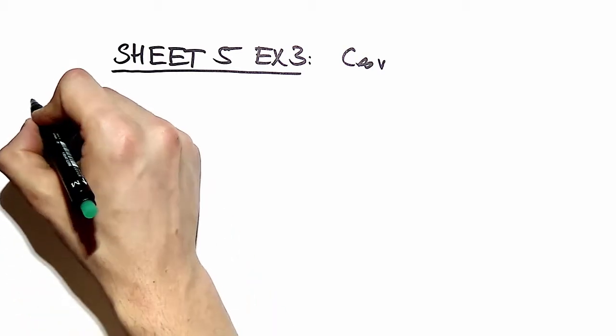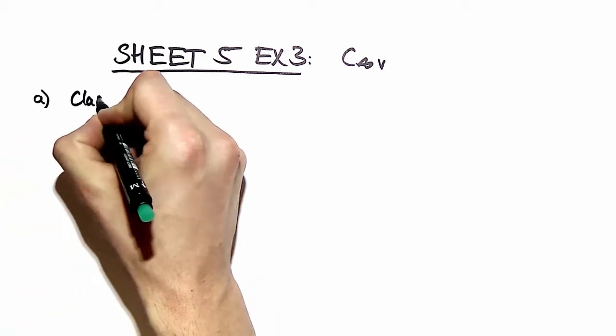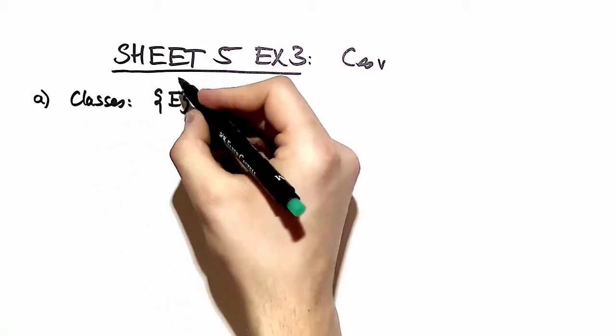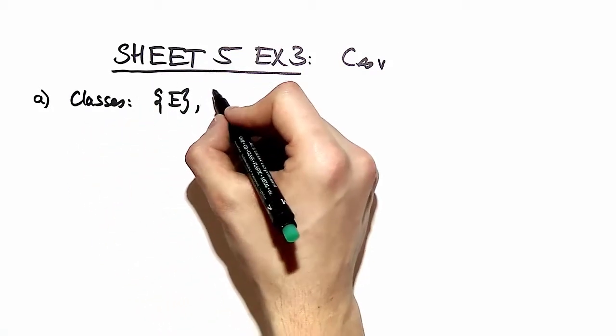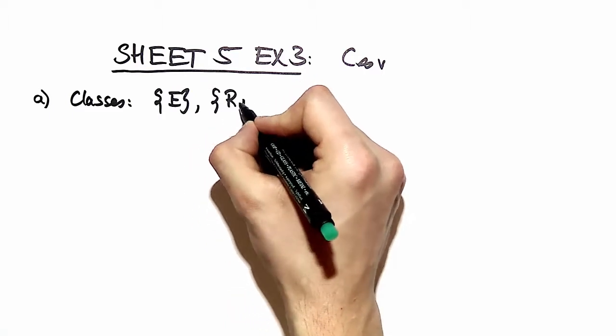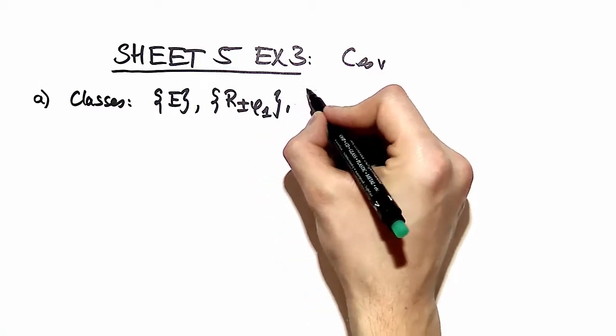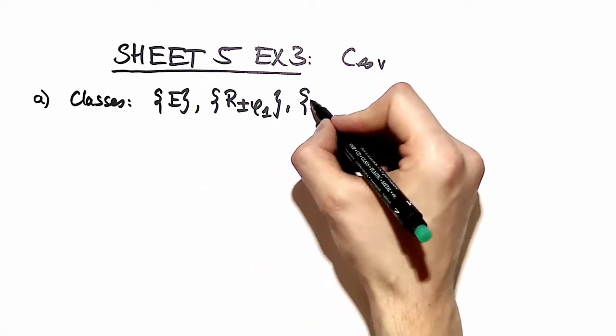By the rules of obtaining conjugacy classes, we get that E, the identity element, is a separate conjugacy class. Then you have conjugacy classes with rotations with the same angle in the plus and minus the same angle in each conjugacy class.